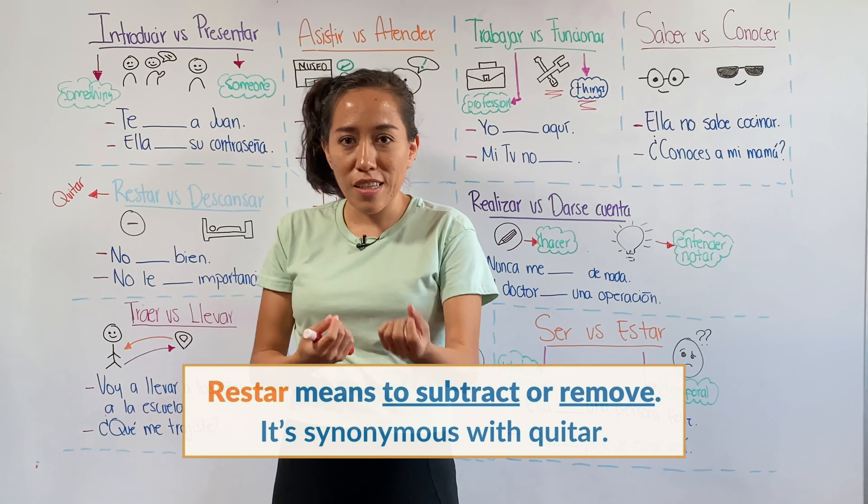Help me with these examples. No blank bien — I didn't rest well — would you use descansar or restar? Descansar: no descansé bien. What about no le blank importancia — don't downplay it? No le restes importancia, or no le quites importancia.